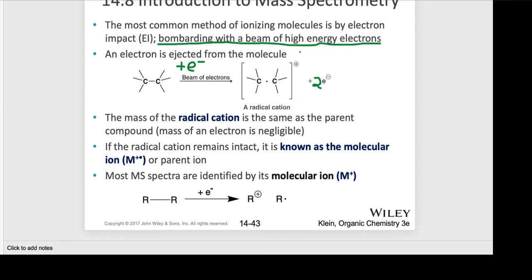The mass of a radical cation is the same as the parent compound because an electron has a tiny, tiny mass, so we're not going to see anything substantial in the spectrum there. If the radical cation remains intact — which is not always true, sometimes it's so unstable it just falls apart — but if it remains intact, you get a molecular ion referred to as M, or M+•, or parent ion. Most spectra are identified by their molecular ion.